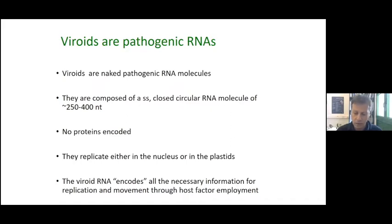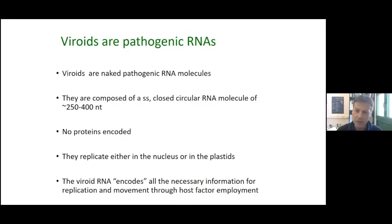Their genome — their RNA — is a single-stranded closed circular RNA molecule, and it ranges between 246 and 401 nucleotides. They do not encode any proteins, and they replicate either in the nucleus or in the plastid. These are two different groups of viroids. People don't even know if they are the result of convergent evolution or if they have a common origin. They're quite different.